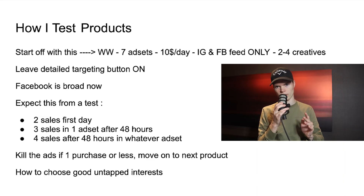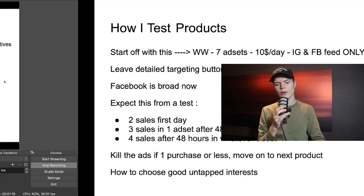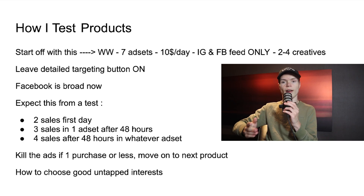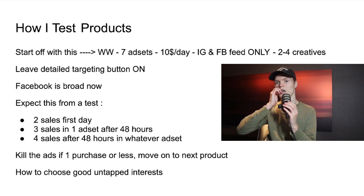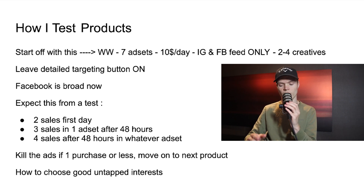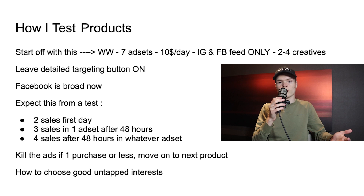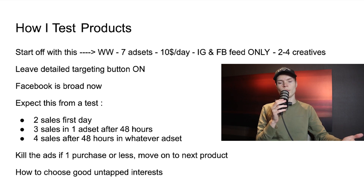I want to teach you guys how to find good, untapped interests. If you're running a dog product and it's a little bit saturated, keep in mind everyone else in the dog niche is targeting the interest 'dogs,' 'dog lovers,' everything like that. Why would you target dogs when that's what everyone else is doing? The people interested in dogs on Facebook have already been spammed by ads, so it won't be an untapped market whatsoever.